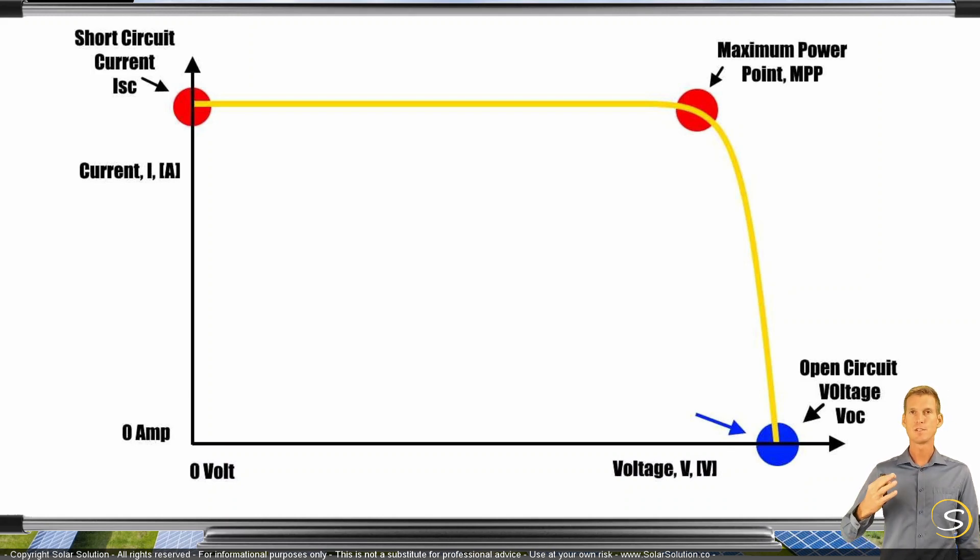And as it is reducing the voltage, the amperage increases. Because we understand by now that under a certain set of conditions, you will always be somewhere along this graph. You'll always be at a certain point on the yellow line. So if you reduce the voltage, then automatically the amperage increases and you start to draw power from the panel.